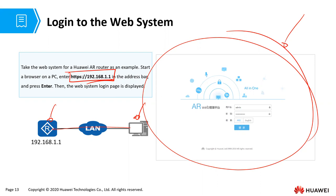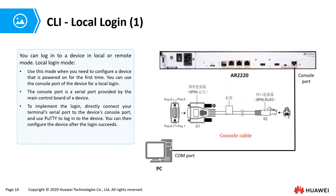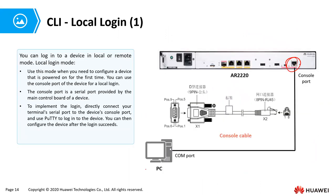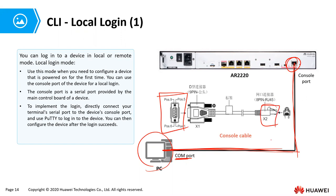For command-line interface access, you can use local access where you're physically connected to the device. In that case, you'll be connected to the console port. You get your PC COM port and connect it using a rollover cable or console cable to the console port of the device, which is normally RJ45 to DB9. The DB9 port goes to the COM port of your computer. Very few computers have a COM port these days, so we normally use adapters — a DB9 on one end and USB on the other — and then plug the USB into our laptop.